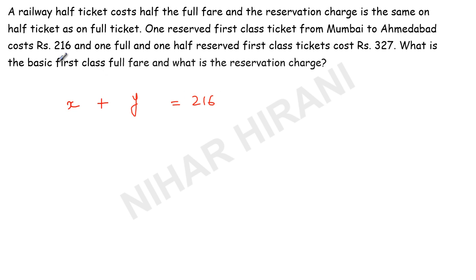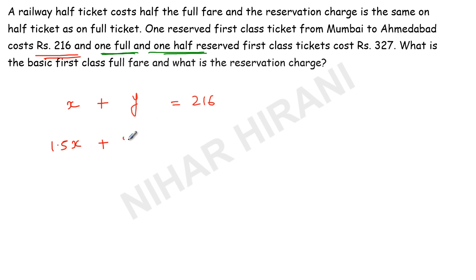We made that equation based on the first statement. Now the further statement says if you buy one full ticket and one half ticket, it means you are buying 1.5 tickets. So 1.5 times x, because for a half ticket it's half price and for a full ticket it's full price. So for 1.5 tickets it will be 1.5x, plus 2y because there are two tickets — one full ticket and one half ticket — and you pay the same reservation charge for both.